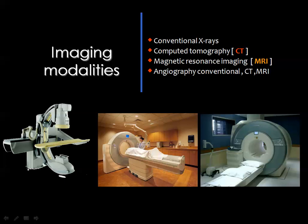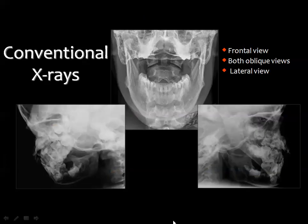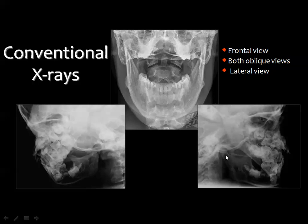The traditional way for examination of the mandible was conventional x-rays. These x-rays were obtained in the frontal view, as you can see here, and in oblique views for assessment of the left mandibular ramus and condyle, and also the oblique view for assessment of the right mandibular ramus and condyle.